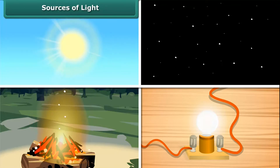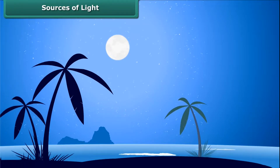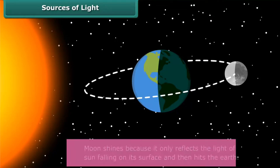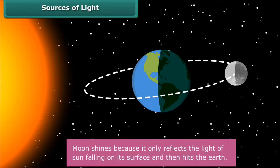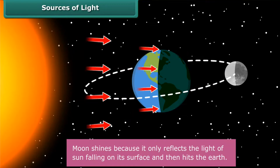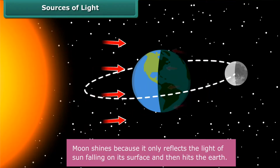But wait, not all things that shine are light sources. The moon is not a natural source of light. It does not have its own light. It only reflects the light of the sun falling on its surface and then hits the earth, due to which it appears shiny when seen from earth.